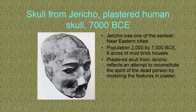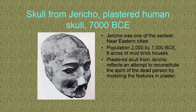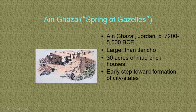Here's our first art object — a skull from Jericho, which is in modern Israel. Jericho is probably one of the earliest ancient Near Eastern cities, with a population of 2,000 people by 7,000 BCE — roughly 9,000 years ago — covering six acres. This is a plastered skull. They found lots of these: the inhabitants would save human skulls, coat them with plaster, and keep them in order to reconstitute the spirits of their ancestors so they could talk to them or gain enlightenment from them. A good subject for Halloween!